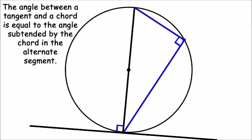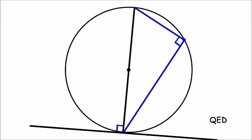And so we have proven that where a tangent meets a radius, the angle between them is always 90 degrees.